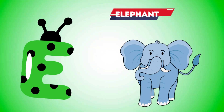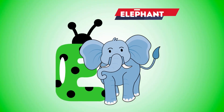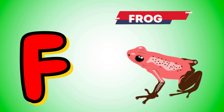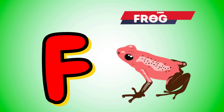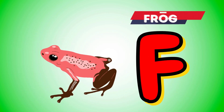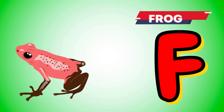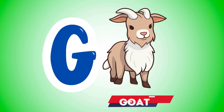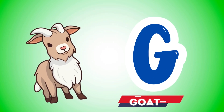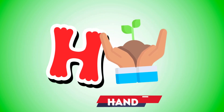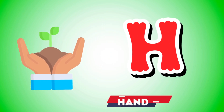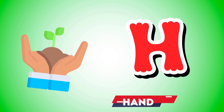E is for elephant, e-e-elephant. F is for frog, f-f-frog. G is for goat, g-g-goat. H is for hand, h-h-hand.